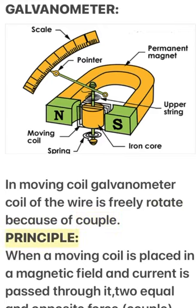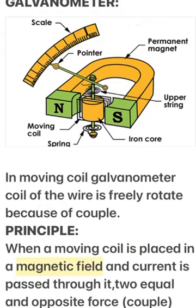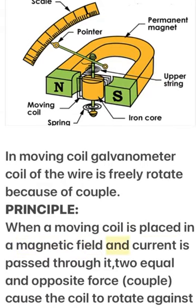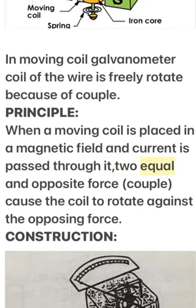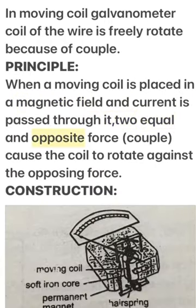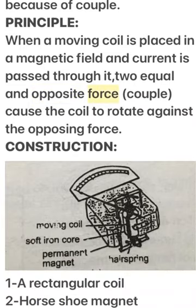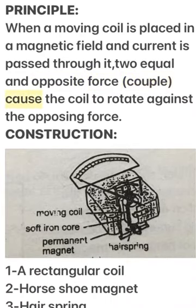Principle: When a moving coil is placed in a magnetic field and current is passed through it, equal and opposite forces form a couple, causing the coil to rotate against the opposing force.